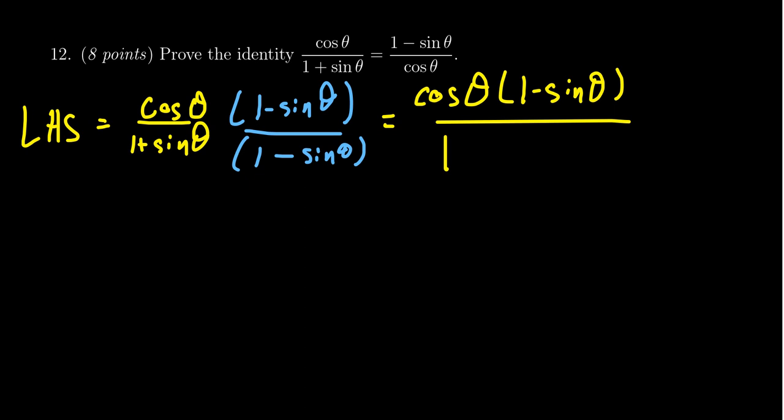If you foil that out, you're going to get a one. You're going to get a minus sine, but a plus sine. They cancel out and you're going to get a minus sine squared theta right there.